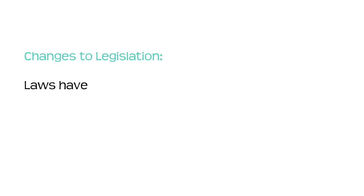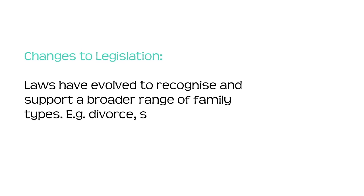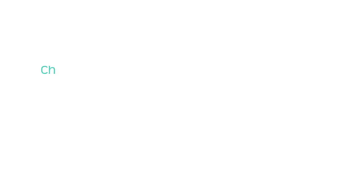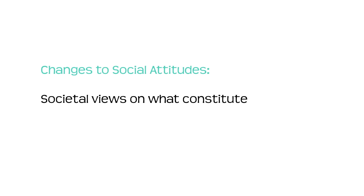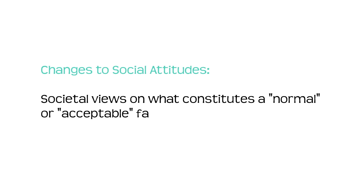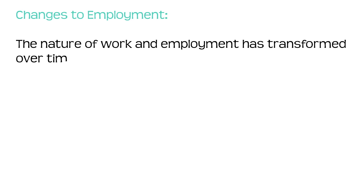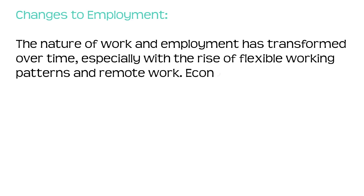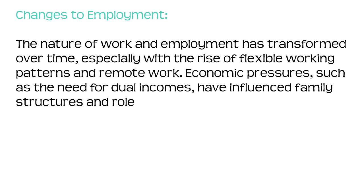Changes to legislation: laws have evolved to recognise and support a broader range of family types, such as divorce, same-sex relationships, and adoption and surrogacy. Changes to social attitudes: societal views on what constitutes a normal or acceptable family have evolved. The nature of work and employment has transformed over time, especially with the rise of flexible working patterns and remote work. Economic pressures, such as the need for dual incomes, have influenced family structures and roles.